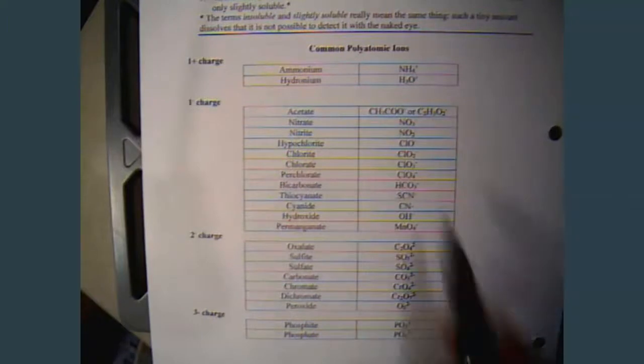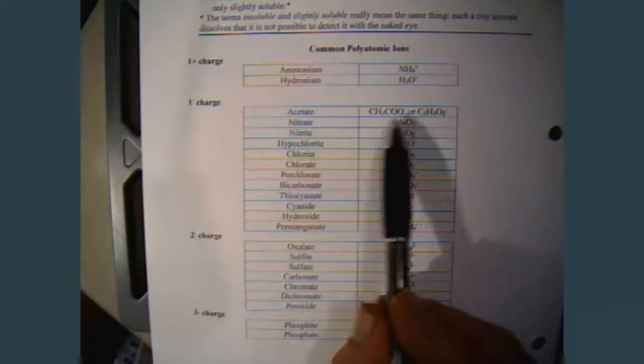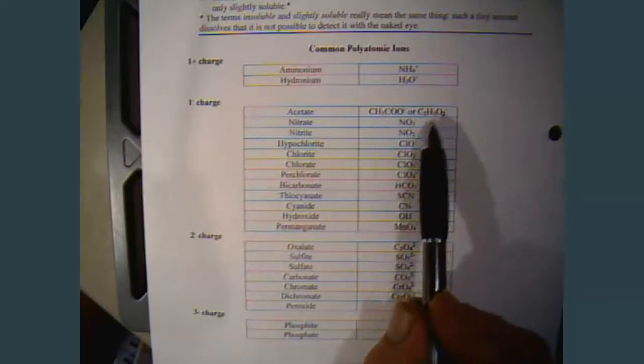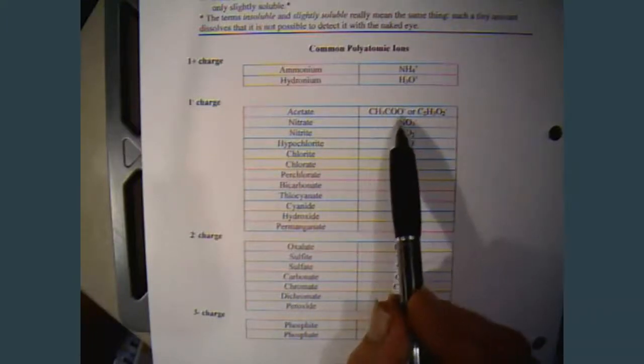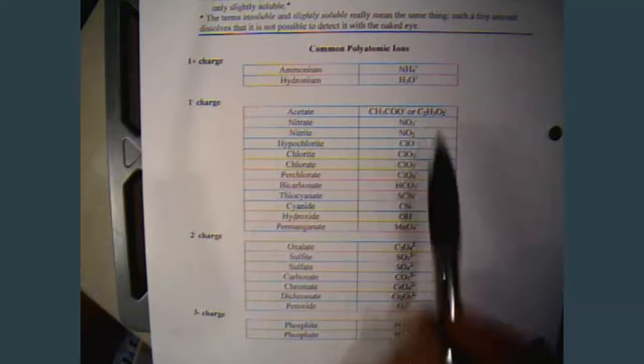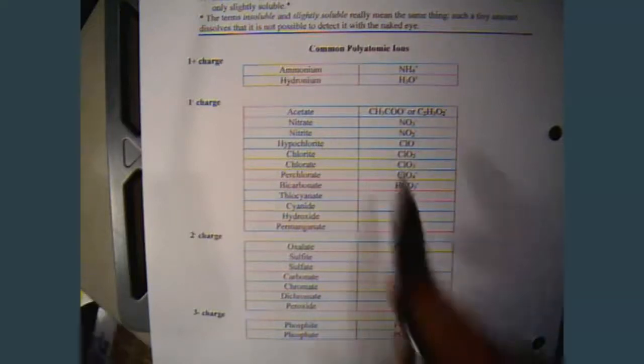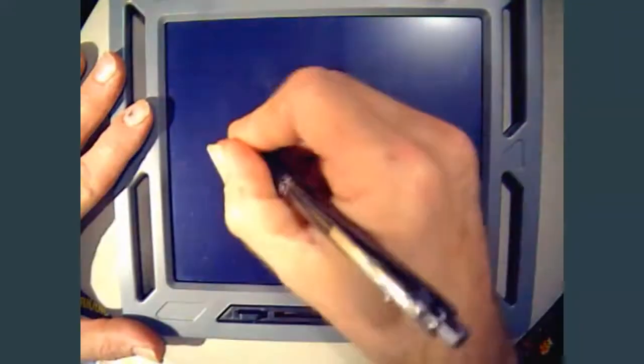The rest of the polyatomic ions all have negative charges. Notice that there are two different ways that you can write acetate. You can write it as CH3COO with a minus, or C2H3O2. A lot of times I like to write it this way, and the reason for that is because it indicates the chemical structure a little bit better.